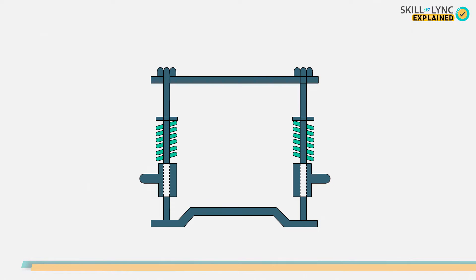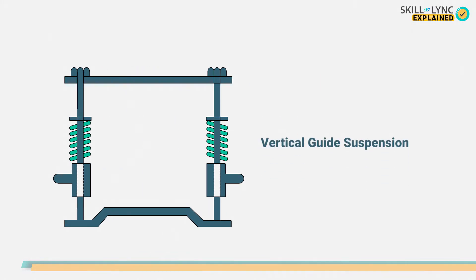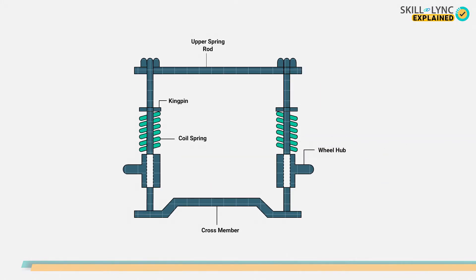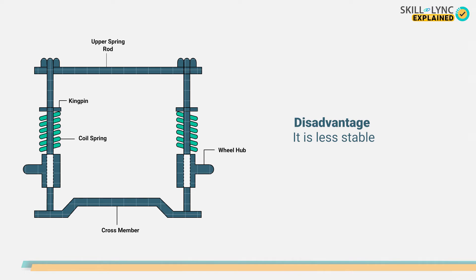The last and sixth type is the vertical guide suspension. Here, the kingpin is directly connected to the crossmember. Depending upon the movement of the wheel, the kingpin slides up and down, thereby compressing or elongating the spring. The disadvantage of this type is that it is less stable.